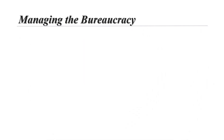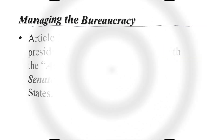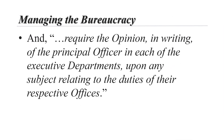The word bureaucracy does not appear anywhere in the Constitution, but bureaucracy has its constitutional roots. Article 2, Section 2 gives the president the power to nominate, with the advice and consent of the Senate, the officers of the United States. It also tells the president to require the opinion in writing of the principal officer in each of the executive departments upon any subject relating to the duties of their respective offices. This section establishes the existence of the executive departments, whose heads are nominated by the president and confirmed by the Senate, and gives the president the power to manage as the chief executive.